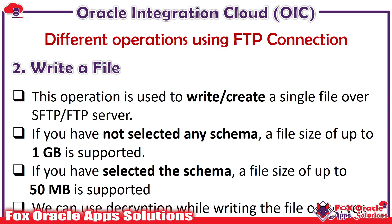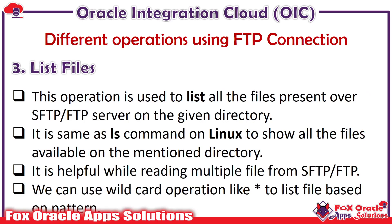The write a file operation is used when we have to create a file over the SFTP server, or when we have already generated a file in the OIC logical directory and need to write it to the SFTP server. When using write a file without providing any schema, we can write files up to 1 GB. When we provide a schema such as CSV or XML, we can write a file up to 15 MB only. We can also use encryption and decryption while writing the file over the SFTP server.